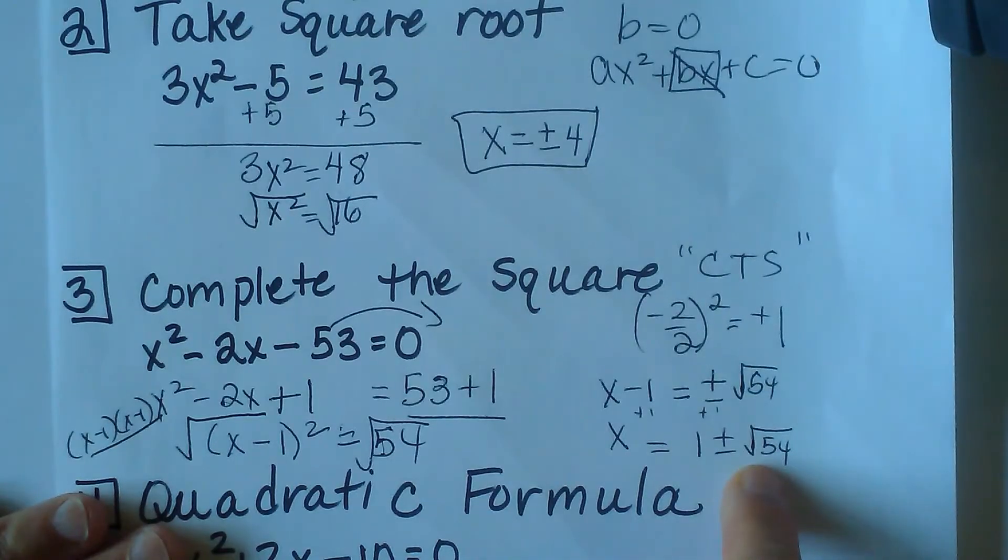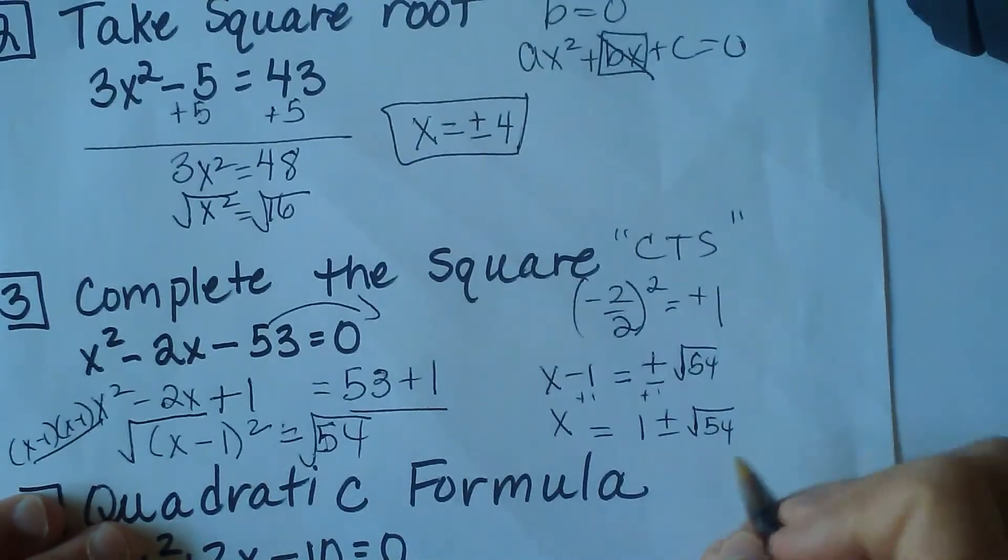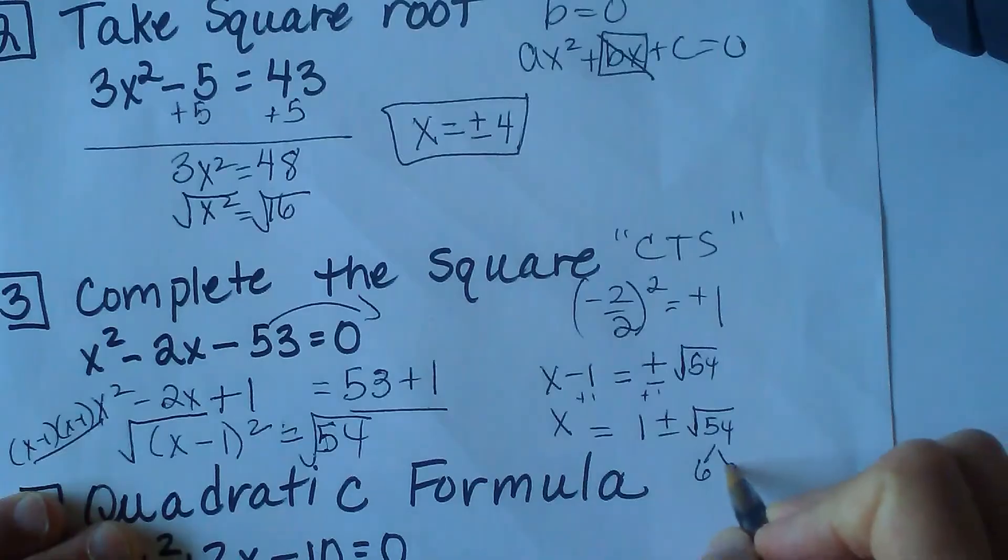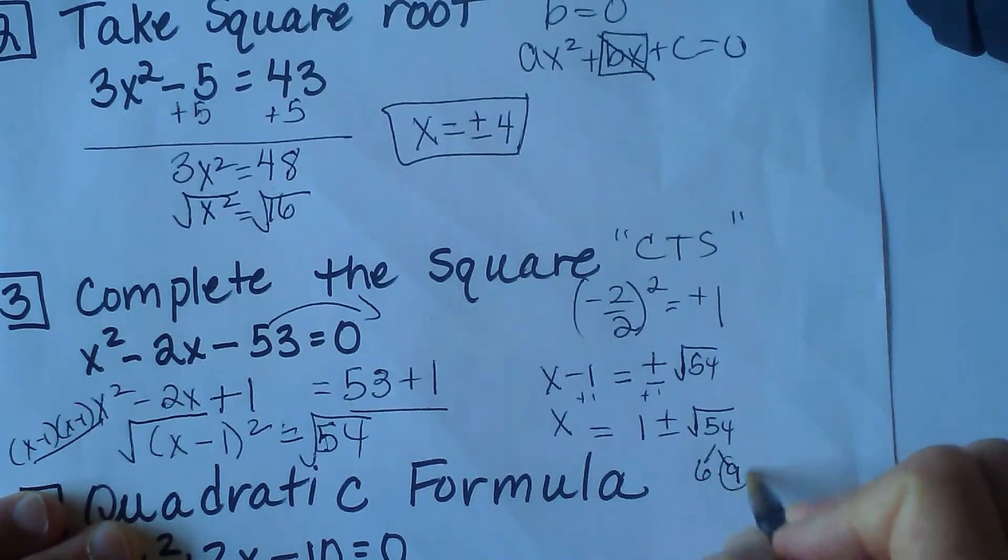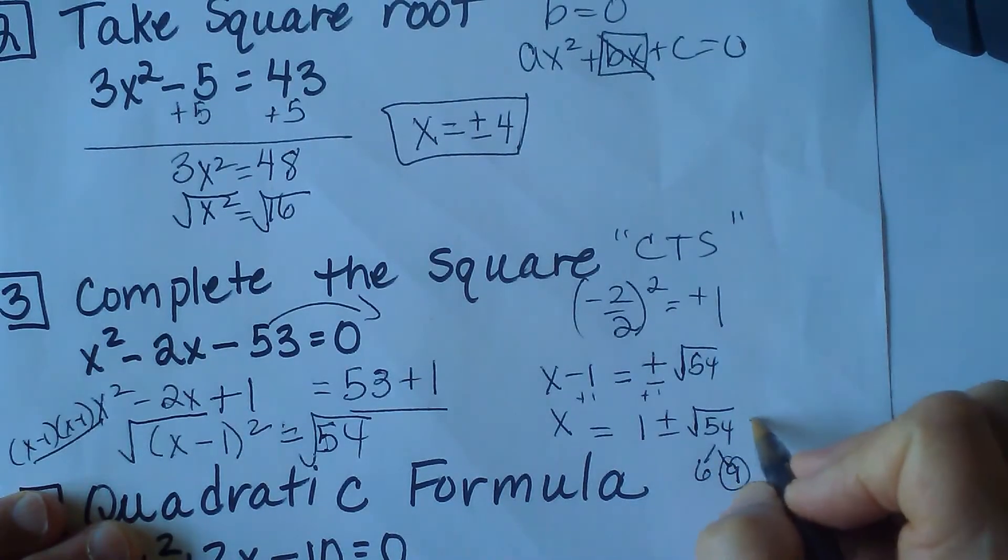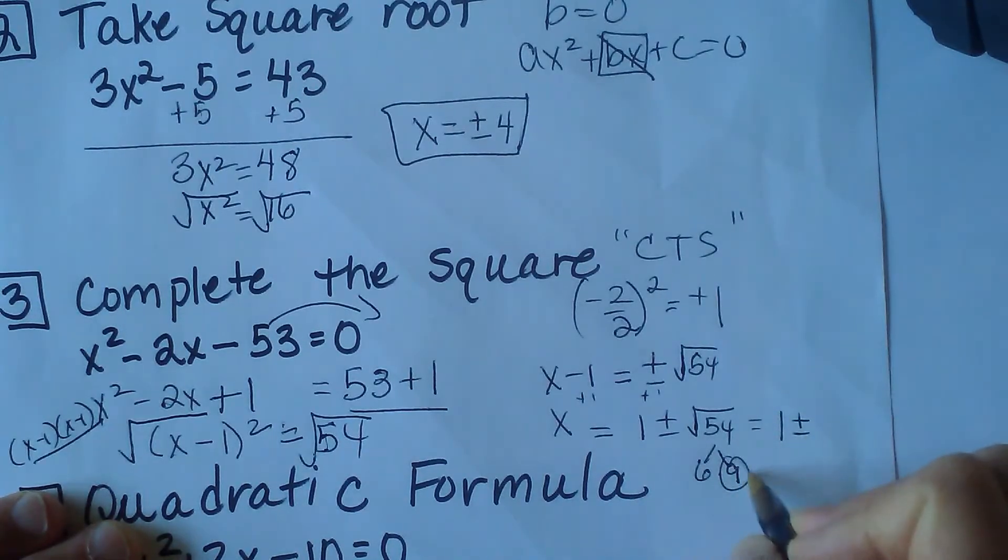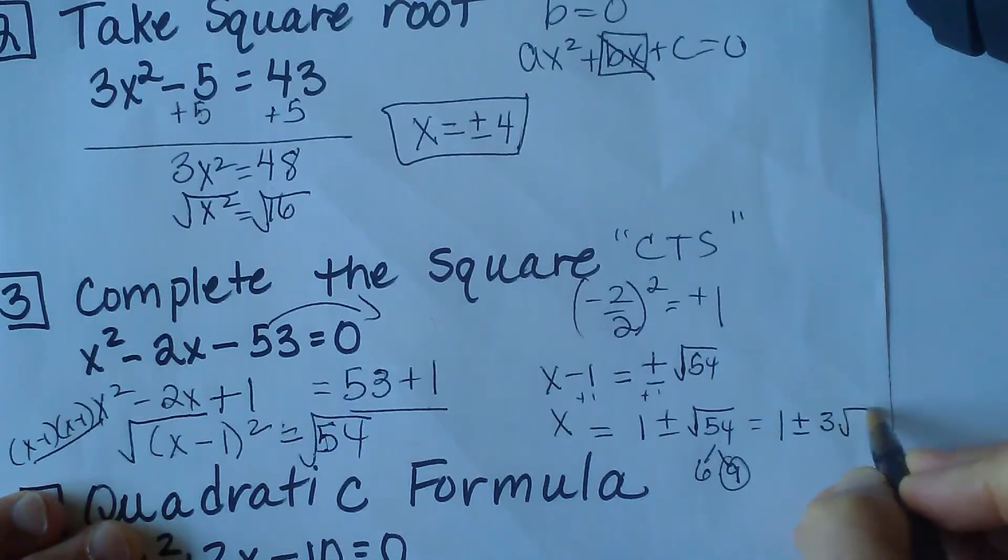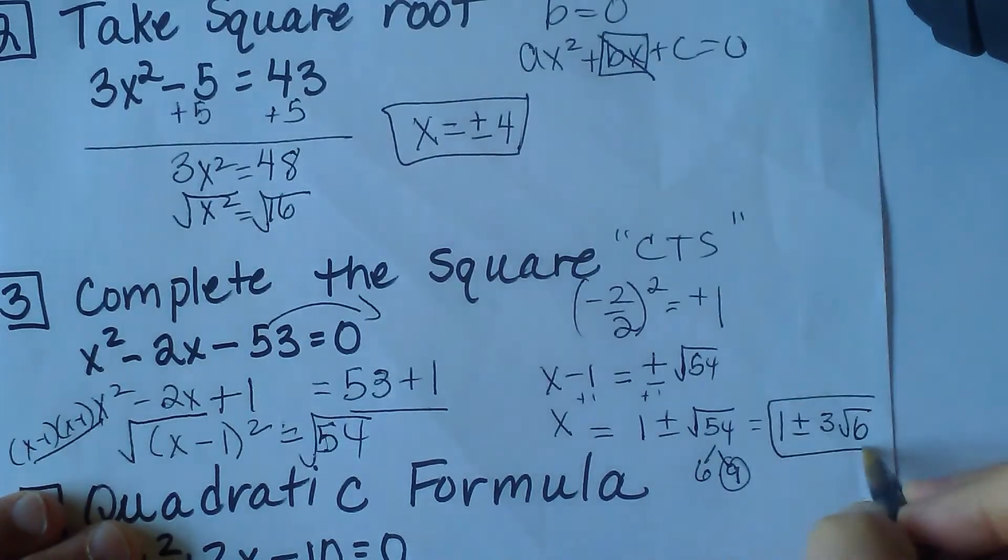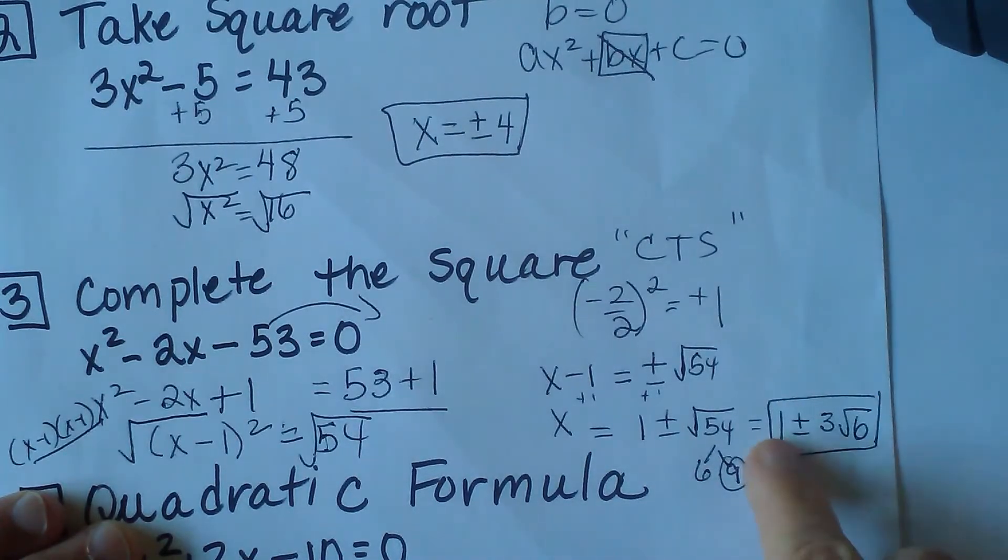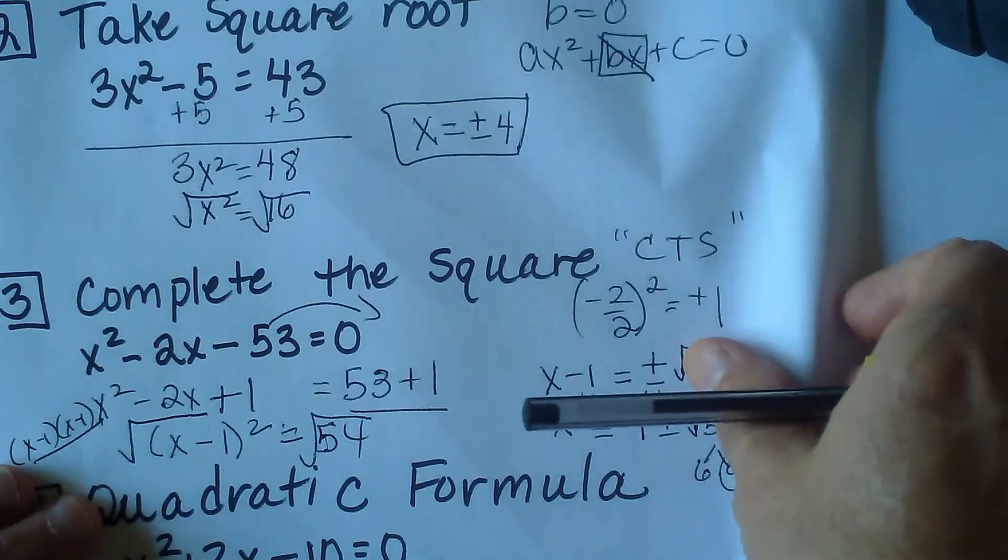Now the square root of 54 does simplify because we know 6 times 9 is 54, and 9 is a perfect square. So we can simplify that to 1 plus or minus, the square root of 9 is 3 root 6. And there is our final answer, 1 plus or minus 3 square root of 6. And that's completing the square method.